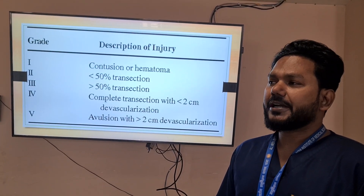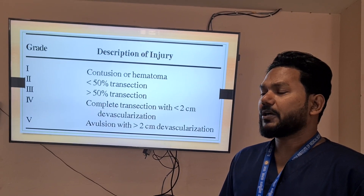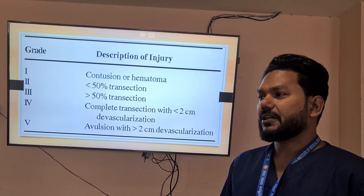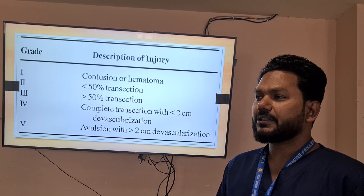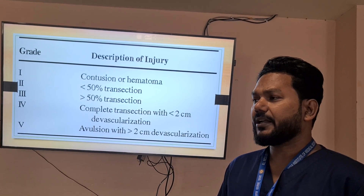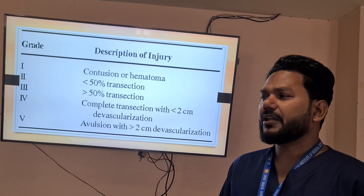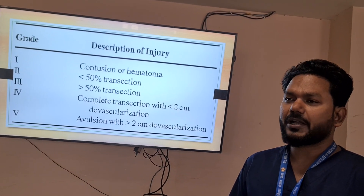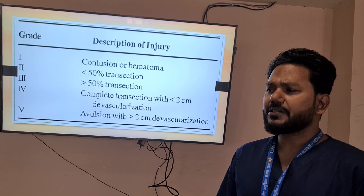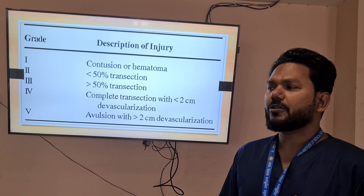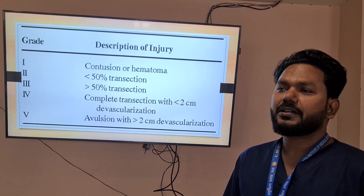There are five grades of ureteric injuries. Grade 1 involves contusion or hematoma. Grade 2 is transection of less than 50 percent of the diameter. Grade 3 is transection of more than 50 percent. Grade 4 is complete transection with less than 2 centimeters of devascularized area. Grade 5 is avulsion with more than 2 centimeters of devascularized area.